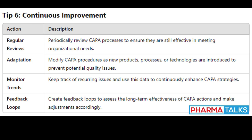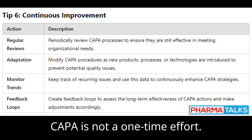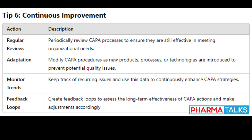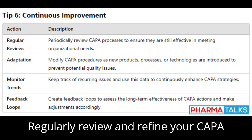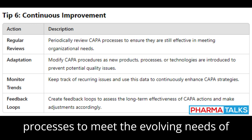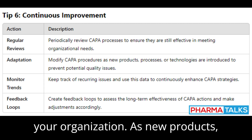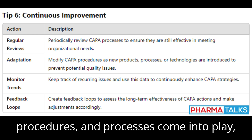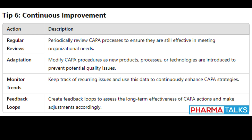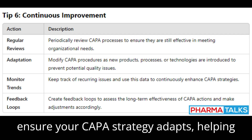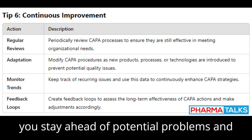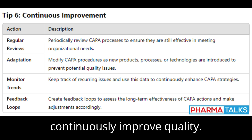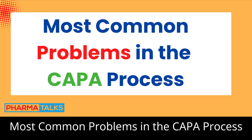Tip 6: Continuous Improvement. CAPA is not a one-time effort. Regularly review and refine your CAPA processes to meet the evolving needs of your organization. As new products, procedures, and processes come into play, ensure your CAPA strategy adapts, helping you stay ahead of potential problems and continuously improve quality.